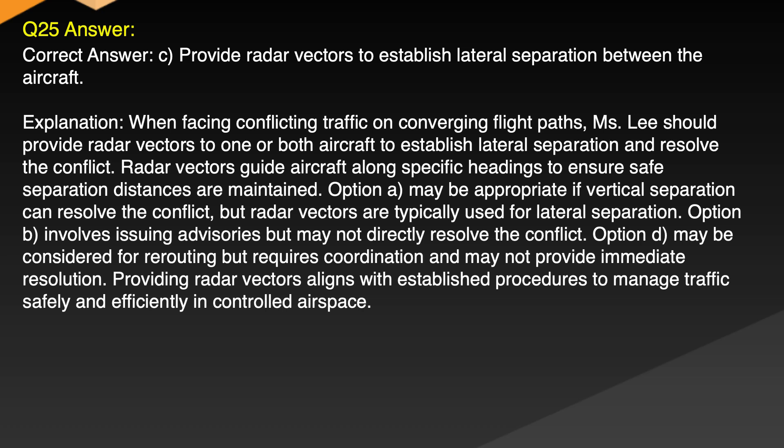Explanation: When facing conflicting traffic on converging flight paths, Ms. Li should provide radar vectors to one or both aircraft to establish lateral separation and resolve the conflict. Radar vectors guide aircraft along specific headings to ensure safe separation distances are maintained. Option A may be appropriate if vertical separation can resolve the conflict but radar vectors are typically used for lateral separation. Option B involves issuing advisories but may not directly resolve the conflict. Option D may be considered for rerouting but requires coordination and may not provide immediate resolution. Providing radar vectors aligns with established procedures to manage traffic safely and efficiently in controlled airspace.